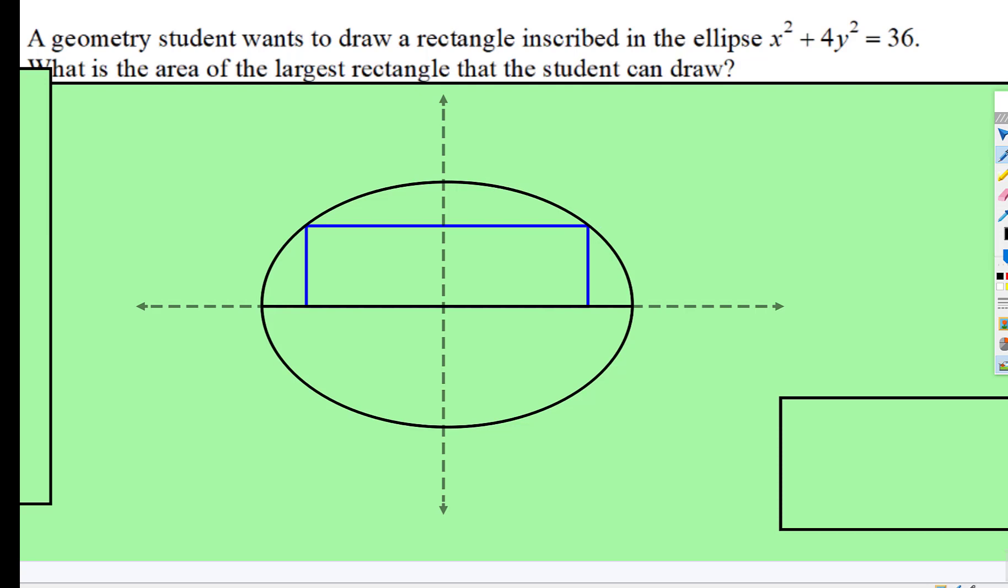So notice what we have. We have this equation right here, but remember an ellipse formula is x squared over a squared plus y squared over b squared is equal to 1. So we need to divide both sides by 36.